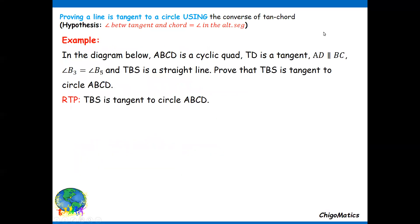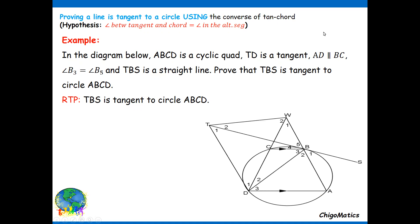As an example: in the diagram, ABCD is a cyclic quad, TD is a tangent, AD is parallel to BC, angle B3 equals B5, and TBS is a straight line. Prove that TBS is tangent to circle ABCD.